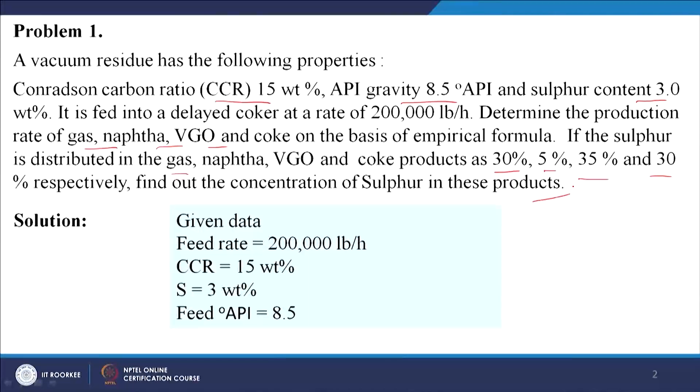This problem is based on delayed coking. The properties of the feedstock are given — CCR and API are both given, and sulfur content is also given. After the delayed coking, we will be getting different products: gas, naphtha, VGO, and coke. These are the major products of the delayed coking process.